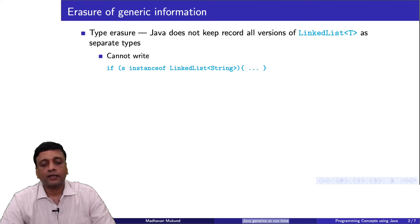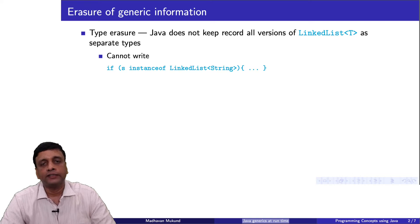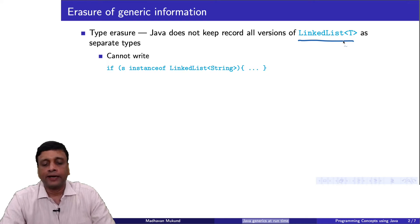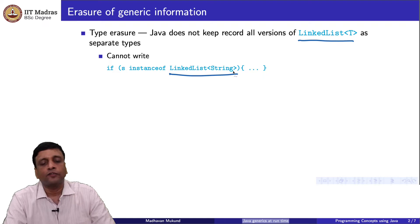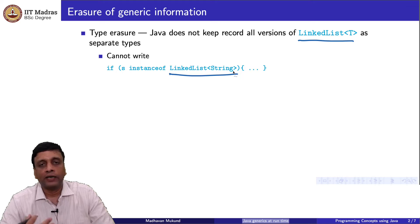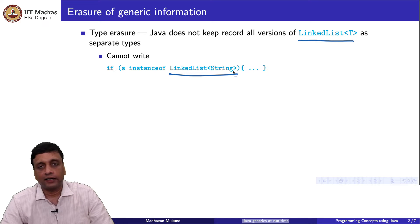When I write a parameterized class, it only compiles into one class at runtime. It is not that I keep instantiating this class with different definitions each time I create a new instance of it. One consequence is that I cannot query whether something is an instance of a specific version of a class. If I have a linked list of an arbitrary type T, I cannot ask whether at a given point S is an instance of a linked list of string, because Java does not have this information. These type names and matching of type variables is only a compiler-level thing.